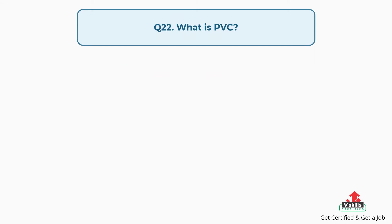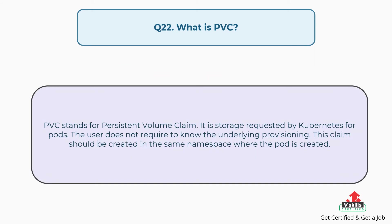Question number twenty-two: What is PVC? PVC stands for Persistent Volume Claim. It is storage requested by Kubernetes for pods. The user does not require to know the underlying provisioning. This claim should be created in the same namespace where the pod is created.